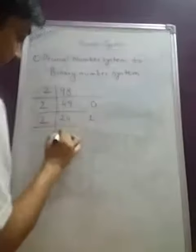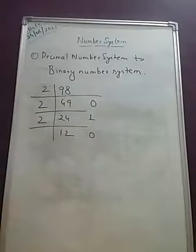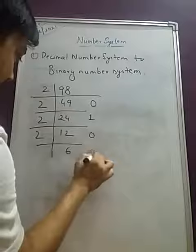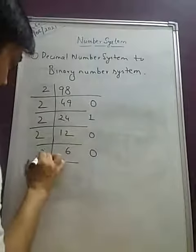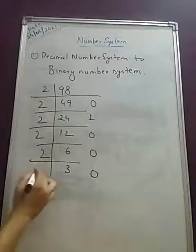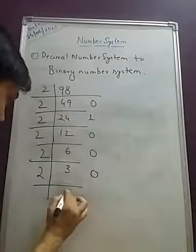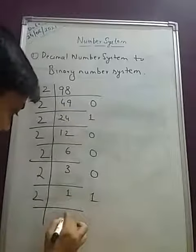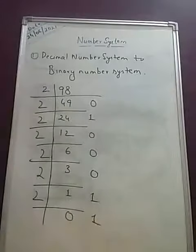It will go for 12 times, 0 will be the remainder. Next it will go for 6 times, 0 will be the remainder. Again it will be divided by 2, 3, 0 will be the remainder. Now it will go for 1 times, 1 will be the remainder and next it will go for 0 times, 1 will be the remainder.